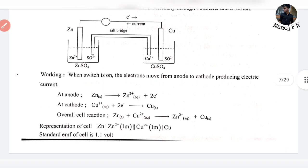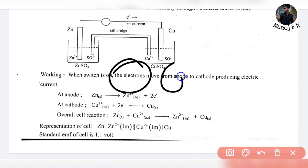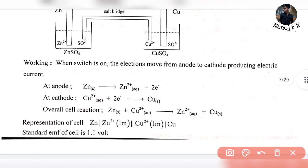Working: When we switch on, current flows from anode to cathode to produce electric current. Anode reaction: Zn → Zn²⁺ + 2e⁻. Cathode reaction: Cu²⁺ + 2e⁻ → Cu.